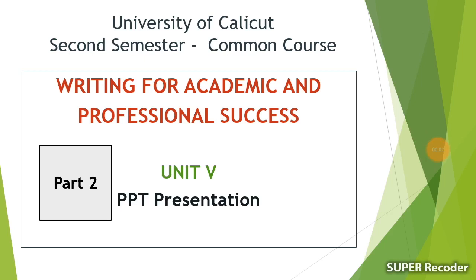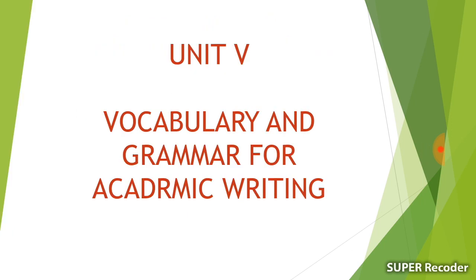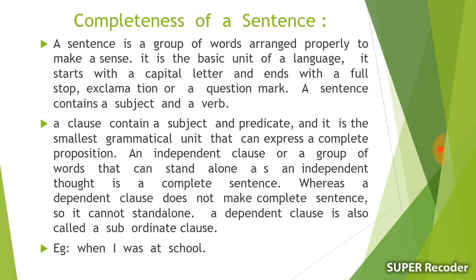Dear students, Writing for Academic and Professional Success is the 5th module. Unit 5 covers Vocabulary and Grammar for Academic Writing. The first topic is completeness of a sentence. Completeness of a sentence is necessary for academic writing.